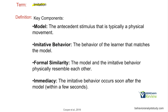Key components of imitation: we need a model and a learner or imitator. The model is the antecedent stimulus, which is typically a physical movement. We need the imitative behavior — the behavior of the learner that is formally similar to the model. And we need immediacy — the imitative behavior occurs within a few seconds after the model.